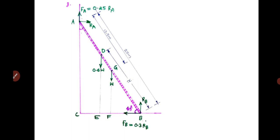We consider the ladder to be in equilibrium under the action of these forces. Applying the conditions of static equilibrium: first, the algebraic sum of horizontal forces equals zero. There are two horizontal forces: RA acting to the right and FB acting to the left. So RA equals FB, that is RA equals 0.3 times RB — that is the first equation. For vertical forces: RB plus 0.25 times RA equals W plus 0.6W.